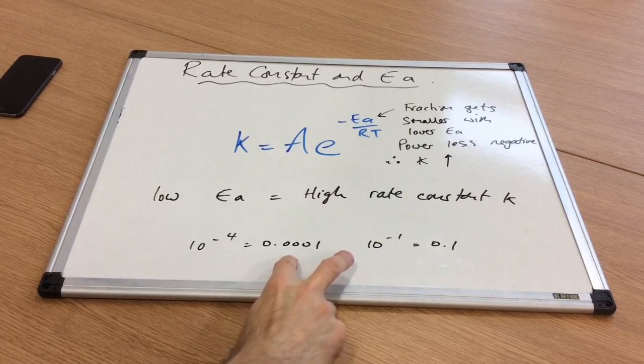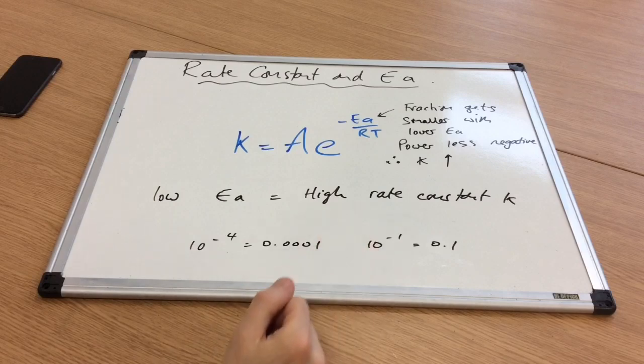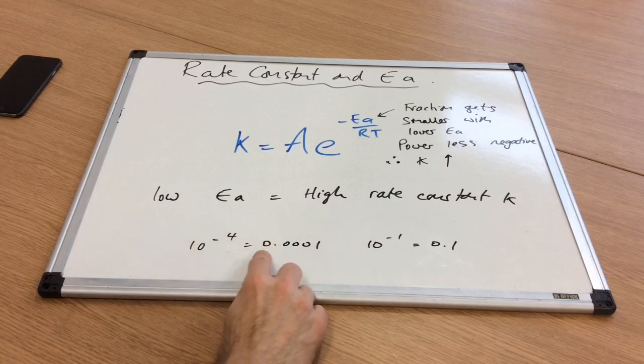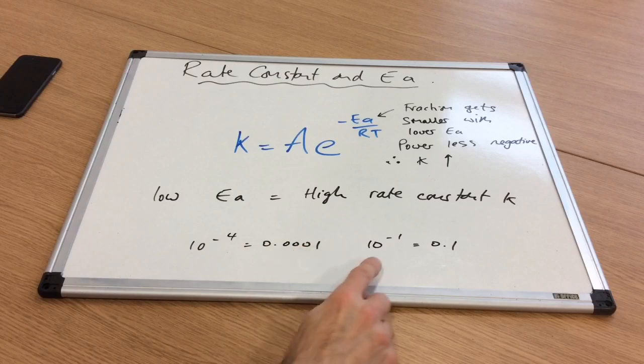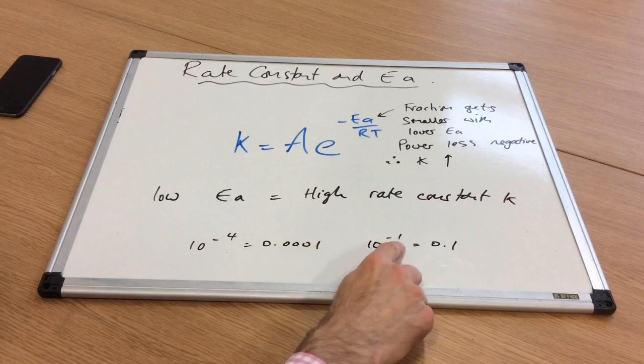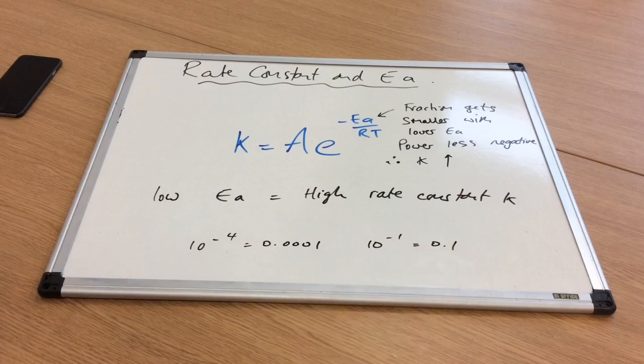Again, I've used the same powers but flipped them over. 10 to the minus 4 raised to a less negative power gives us a bigger number.